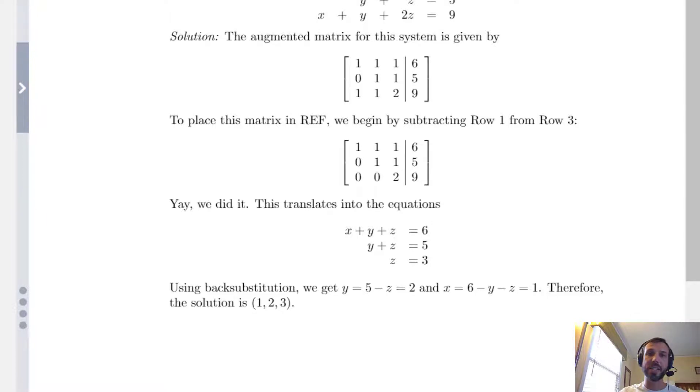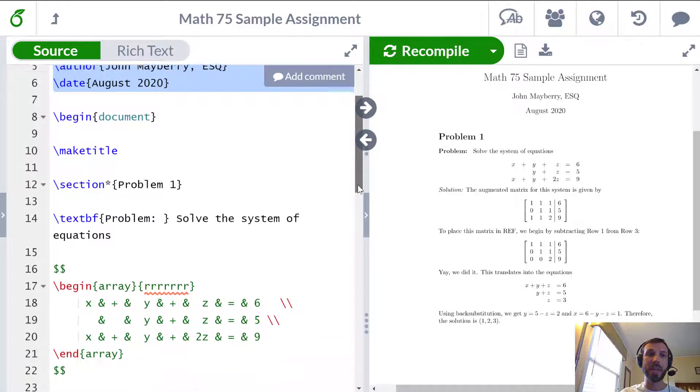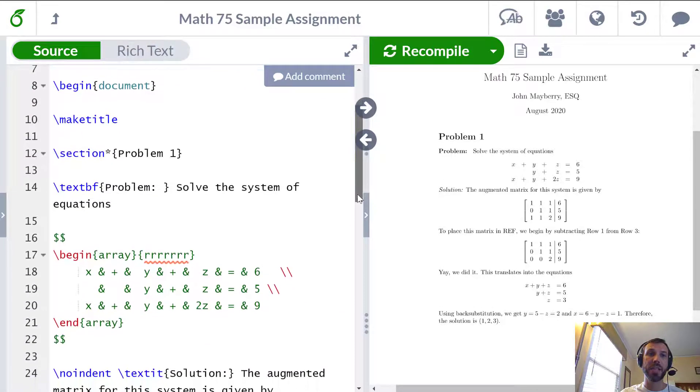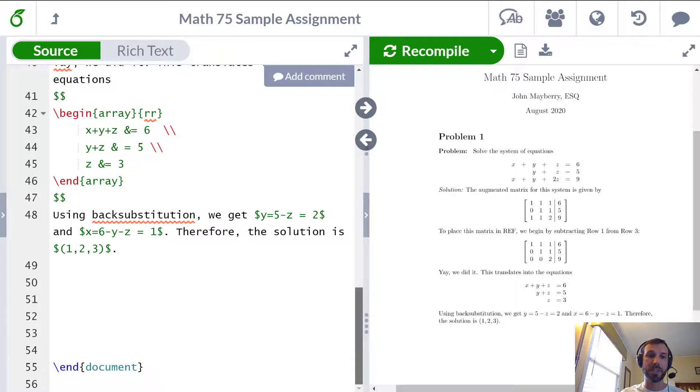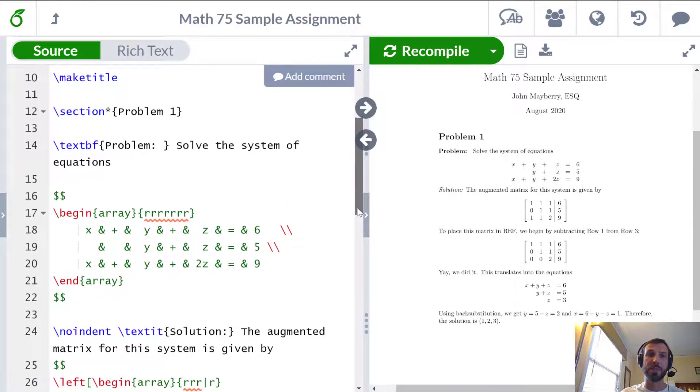Let's dig into the LaTeX code and see how this document was created. Recall from our previous video that every LaTeX document has two sections, a preamble which is everything before the begin document statement and then a main body which is everything between the begin document and end document statements at the end. We'll be focusing on the body here because the preamble is the same as in our introductory video.